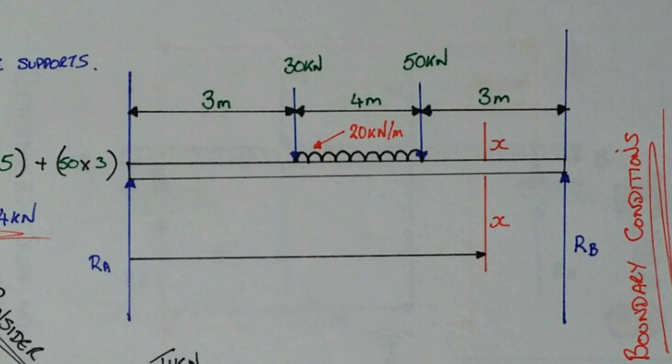Number two, for a UDL that starts at A but does not continue for the entire length of the beam, we cannot directly apply the Macaulay term to our bending moment equation for the reasons given above, as in number one.